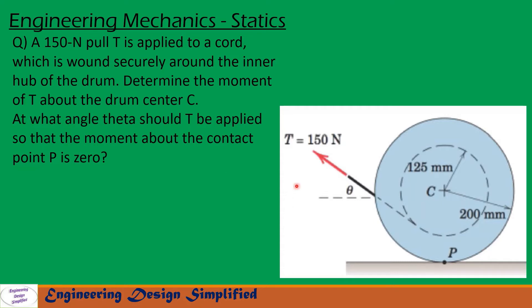In this problem, given is a force T equal to 150 newton applied to the inner hub of this drum tangent to this inner hub. In the first portion of the problem we need to find moment about C due to this load T, and in the second portion we need to find the theta for which the moment due to this point P will be zero. Let's see in the coming slides how to solve this problem.